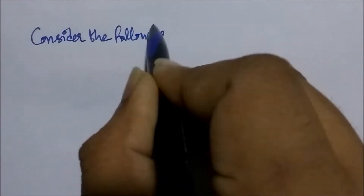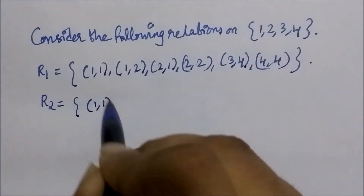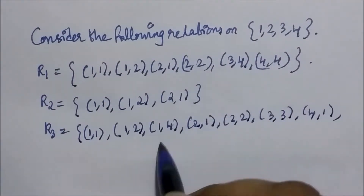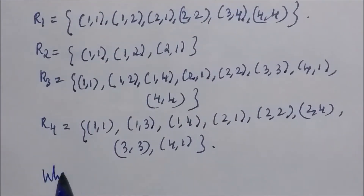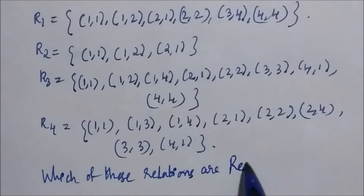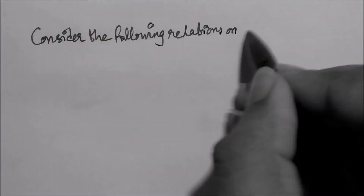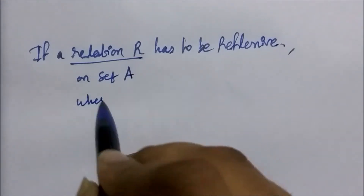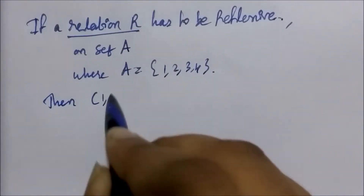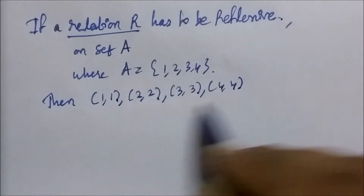Let's see it with an example. Consider the following relations on set {1, 2, 3, 4}. Here R1, R2, R3, and R4 are the four relations given. The question is which of these relations are reflexive? For any relation to be reflexive, it should contain (1,1), (2,2), (3,3), and (4,4), because from the definition, a relation on set A is reflexive if (A, A) belongs to R for all A.